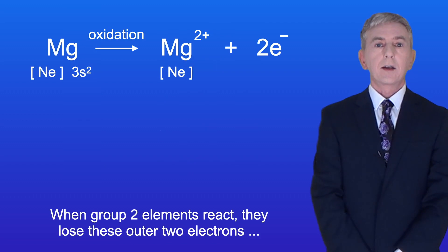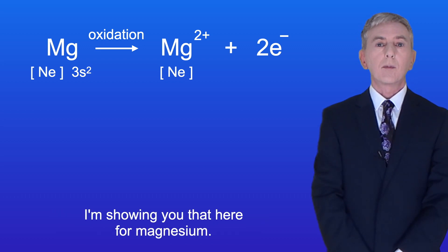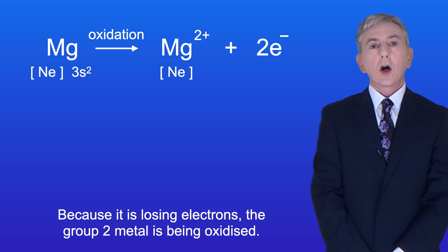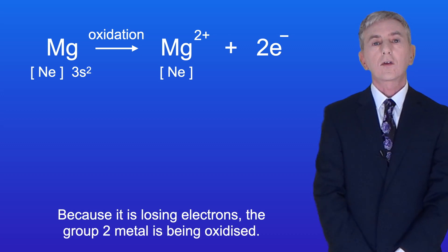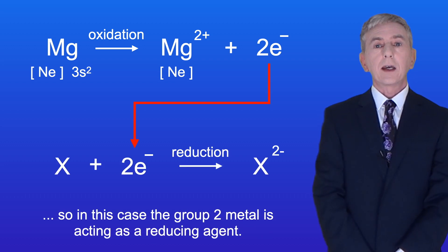When group 2 elements react, they lose these outer two electrons to form the two positive metal ion, and I'm showing that here for magnesium. Because it's losing electrons, the group 2 metal is being oxidized. These two electrons can then be used to reduce another chemical. So in this case, the group 2 metal is acting as a reducing agent.